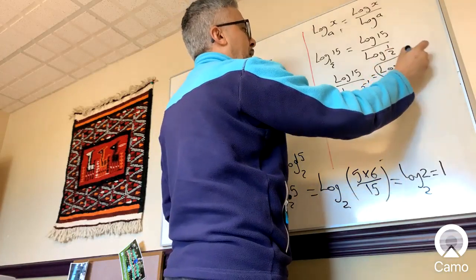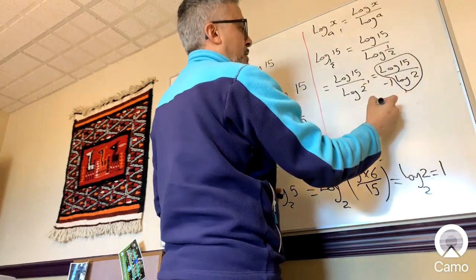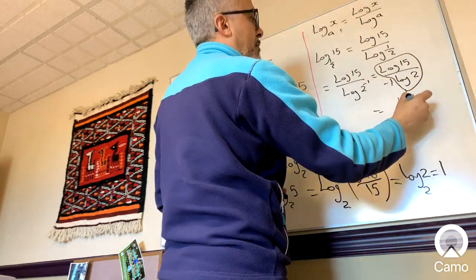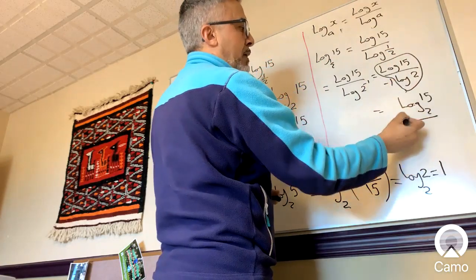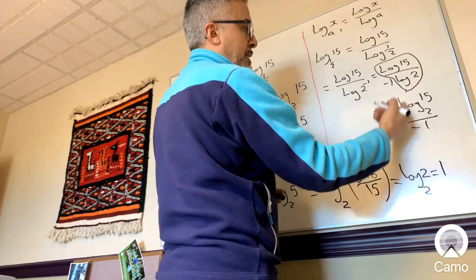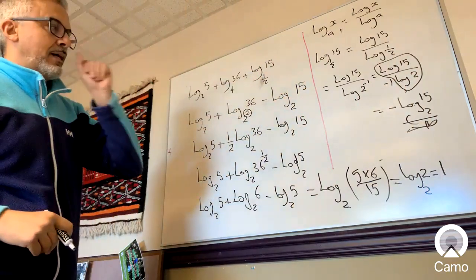Now again, this part right here is this, so I'm just going to go back and change it to that, so that becomes log base 2 of 15, and that negative 1 is on the bottom, but on the bottom is the same as divided by negative 1, so just get rid of that and make it negative right here, and that's what we did there.